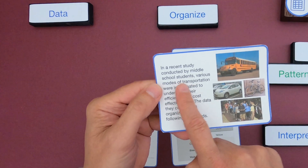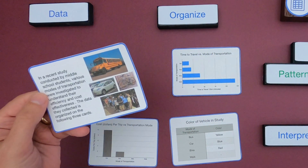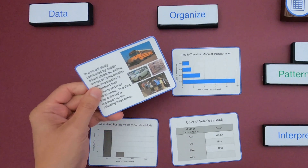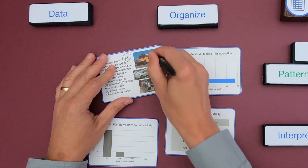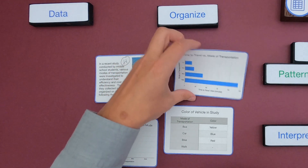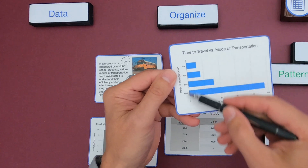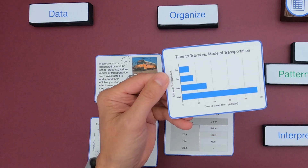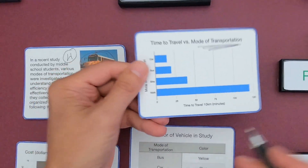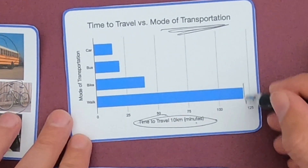A recent study was conducted by some middle school students looking at different modes of transportation. When you're looking at data — especially a graph or an article — I really encourage you to use a pen so you can mark it up. I can see right away that there are four types of transportation: bus, car, bike, and walking. The next thing we're looking at is the time for travel in each of these modes, shown on the y-axis. You can circle the units — this is time to travel, measured in minutes.